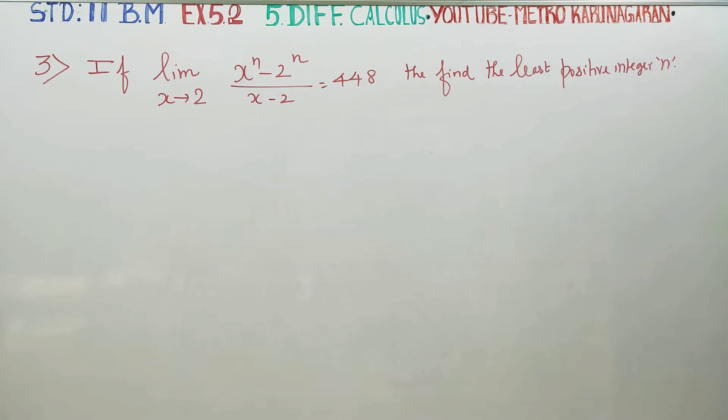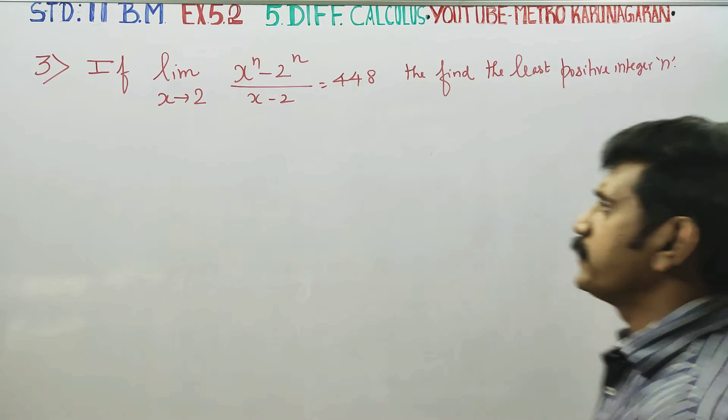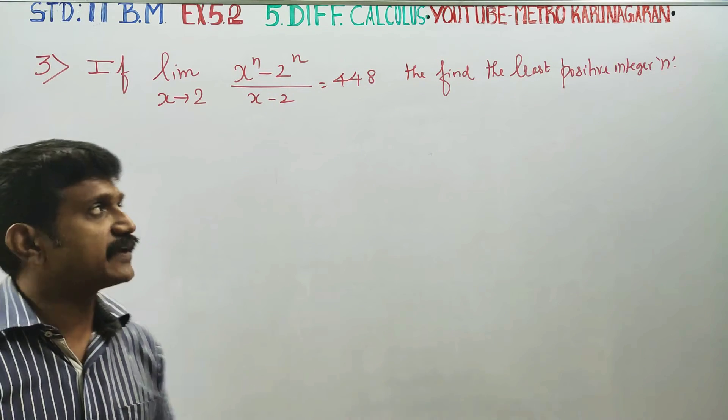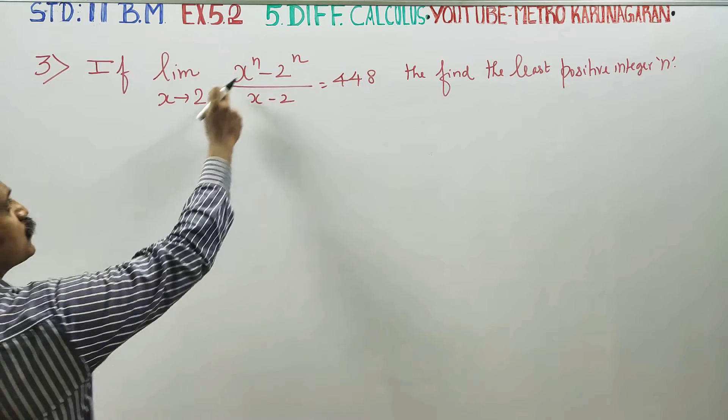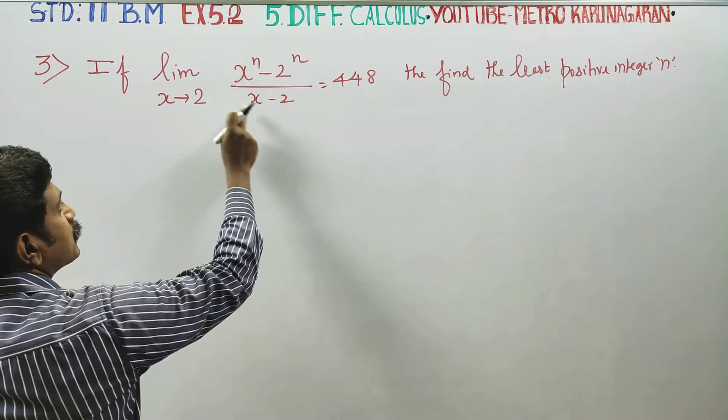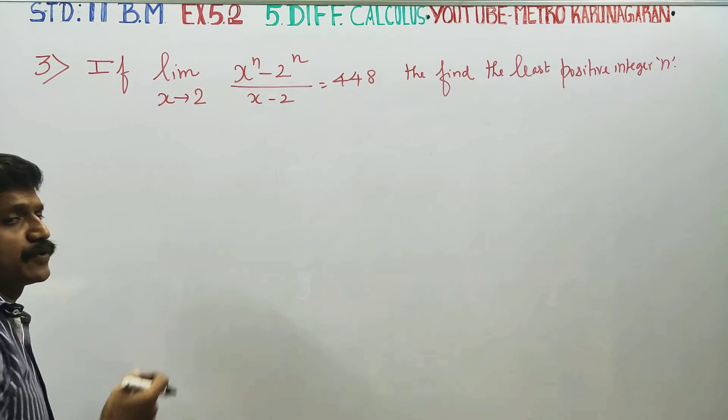Dear 11th standard business maths students, next is number 5.2 question number 3: limit x approaches 2, x power n minus 2 power n divided by x minus 2. If we substitute 2, we get zero, it becomes 0 by 0 form.